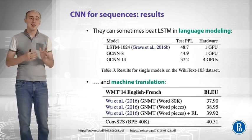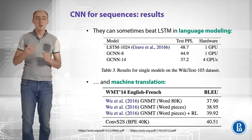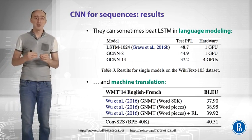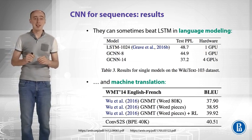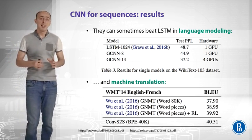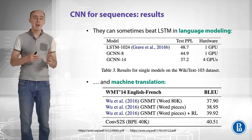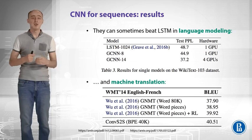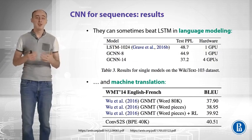Let's see how CNNs work for sequences. The authors provide results on the language modeling dataset Wikitext-103, and this CNN architecture actually beats LSTM — it has lower perplexity and runs faster. Another example is a machine translation dataset from English to French, where the metric is BLEU — the higher the better. Convolutional sequence-to-sequence beats LSTM there as well, which is pretty surprising.